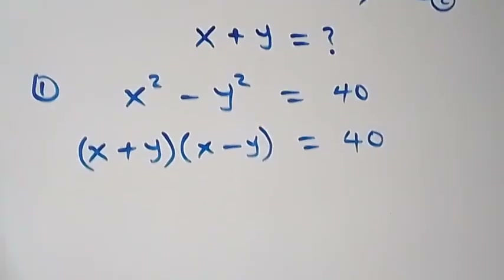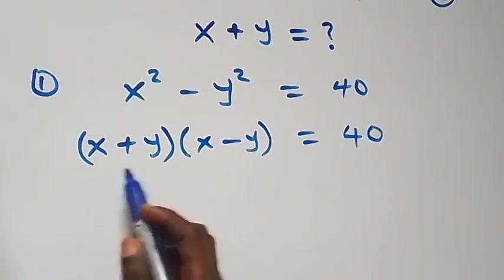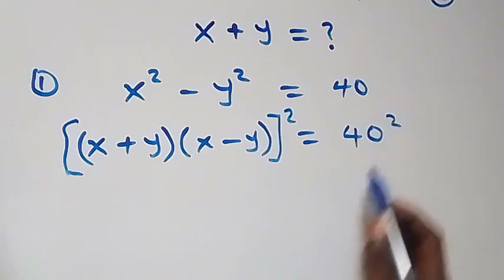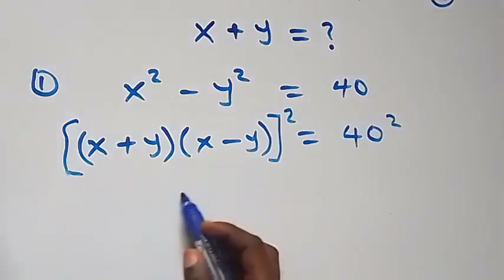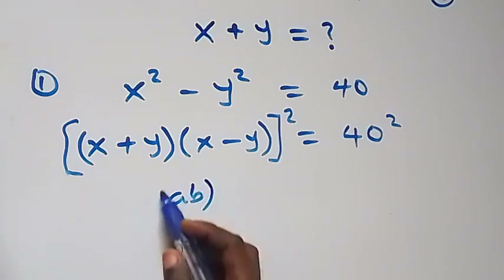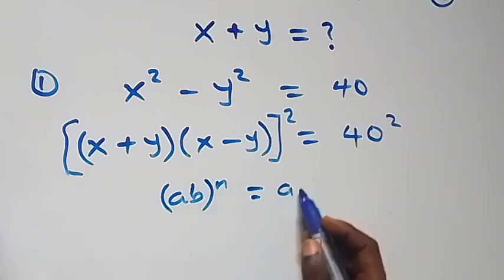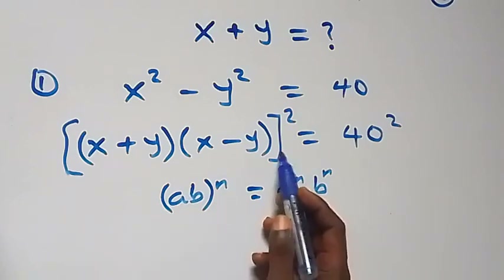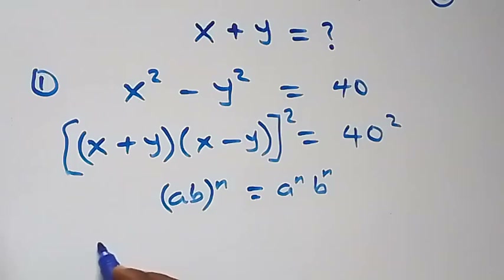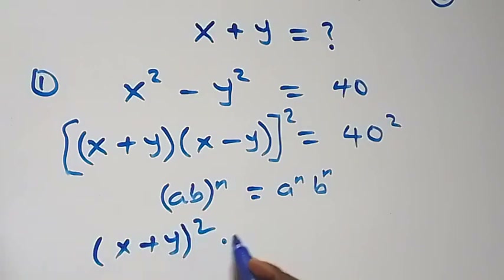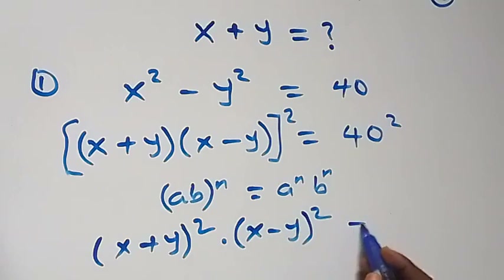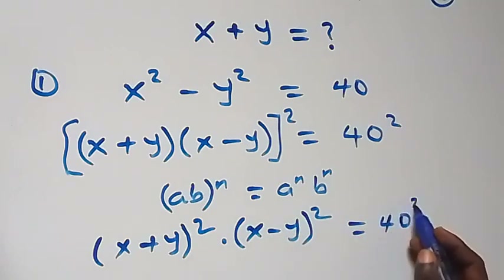Now let's square both sides of this equation. When we square this side, we also square the other side. Using the rule that when we have a·b raised to power n, it equals a to the n times b to the n, the square will affect each of these brackets. So we have x plus y squared, multiplied by x minus y squared, equals 40 squared.